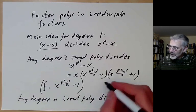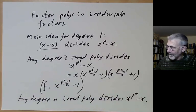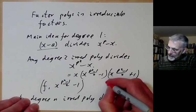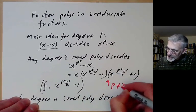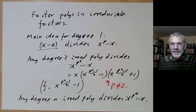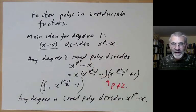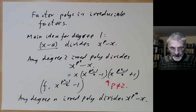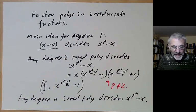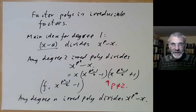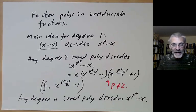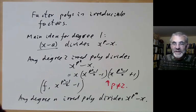More generally, any degree-n irreducible polynomial divides x to the p to the n minus x, so we can do the same trick for any degree. Note this only works if p is not equal to 2; if p equals 2, the method doesn't work directly and you need something a little more complicated. Next lecture, we'll be discussing how to rewrite a lot of number theory in terms of abstract algebra — groups, rings, and fields.